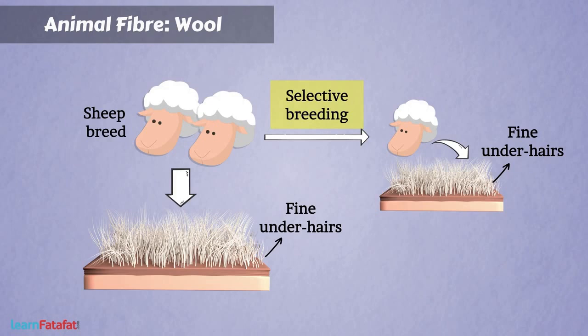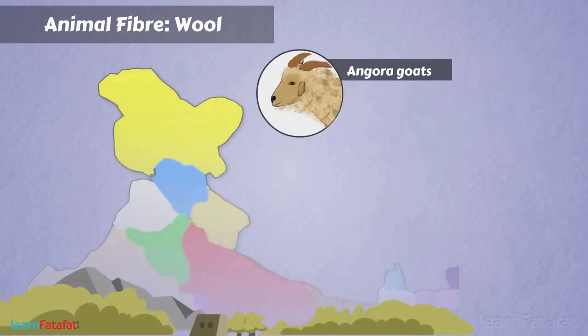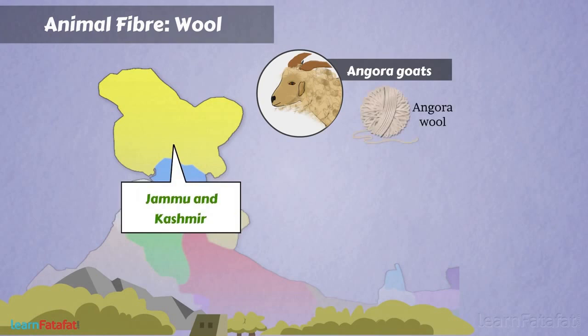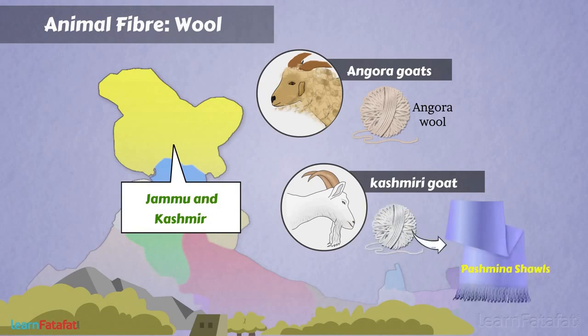There are other animals that also provide wool. Yak wool is popular in Tibet and Ladakh. Angora goats, found in hilly regions like Jammu and Kashmir, provide angora wool. Wool is also obtained from the hairs of goats — the under-hairs of Kashmiri goats are very soft and are used to make fine shawls called pashmina shawls.